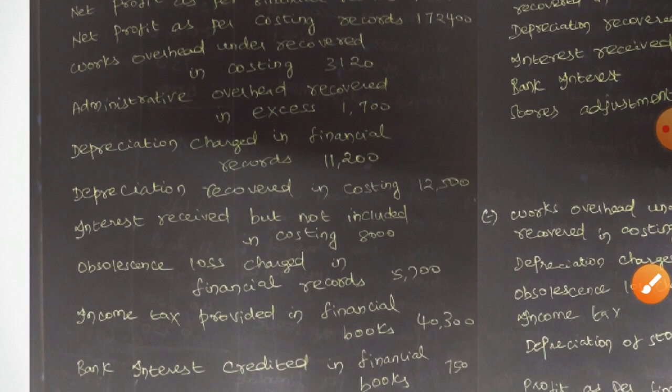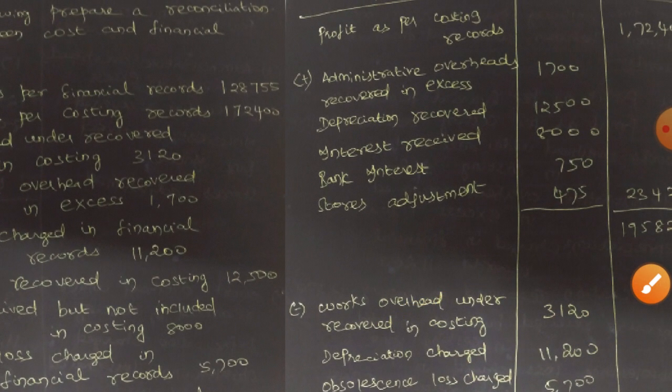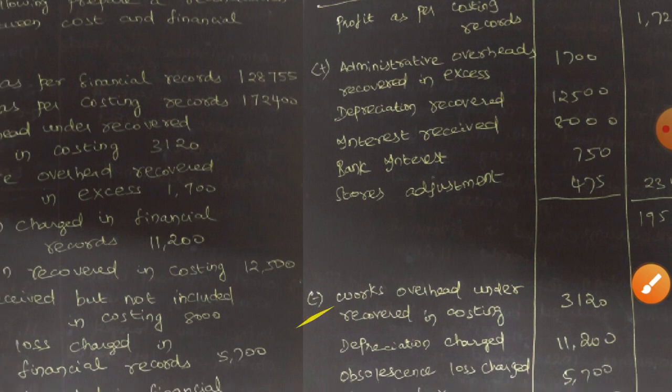The next item is interest received but not included in costing: 8,000. The phrase 'but not included in costing' does not need special importance here — the prime focus is 'interest received,' which is income. Income is a positive value, so interest received 8,000 is added.